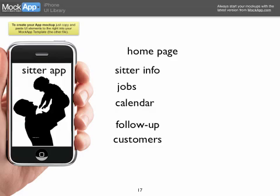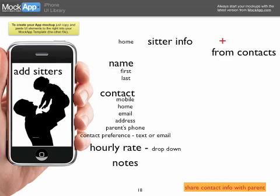Now we are on the sitter side of the app. The home page would have the sitter's own information — because sitters also have to share their info with parents — along with jobs they're working on, their calendar, follow-up items, and a list of their customers. All the sitter information is here. Right here you would share your contact info with parents.